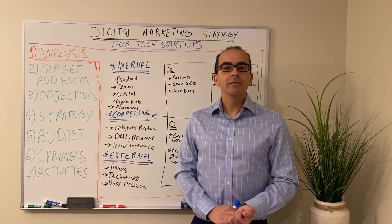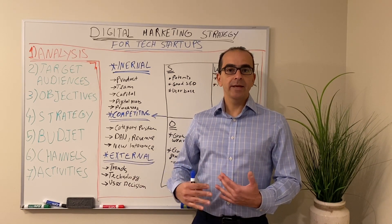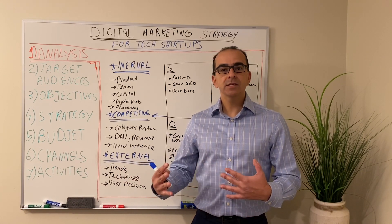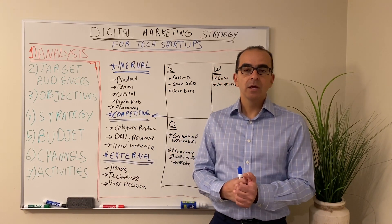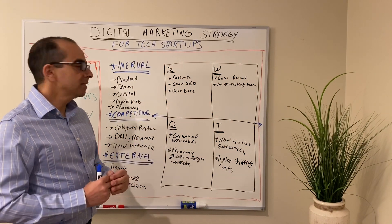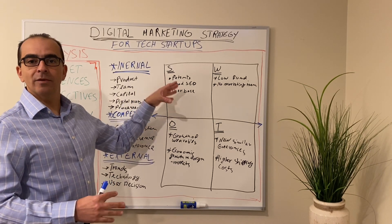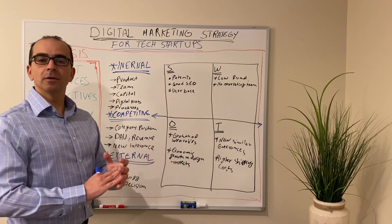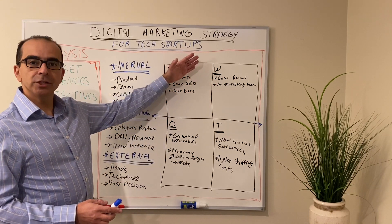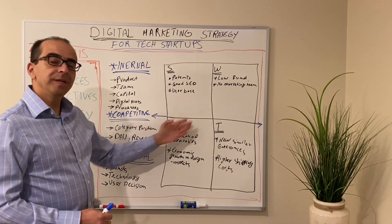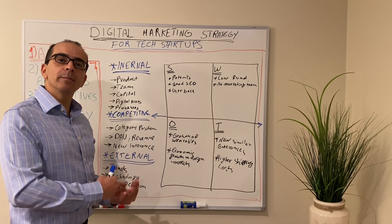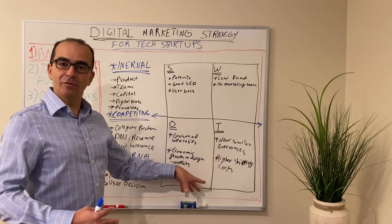After you went through all the internal, competitive, and external environments checklist and identified what can be a strength, a weakness, an opportunity, or a threat, you will end up seeing something like a SWOT table. This is the result of your entire analysis summarized in three to five bullet points in each box in your digital marketing plan. Strengths and weaknesses are internal to your organization — you have control over them. Opportunities and threats happen in the macro environment; they do impact your business, but you don't have control over them.